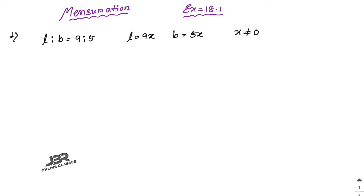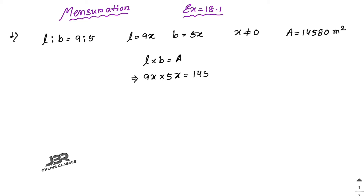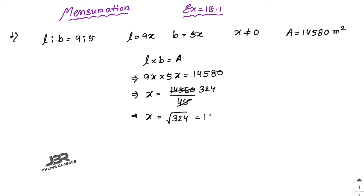If the area of the field is 14,580 square meters, you know the formula: area of a rectangle is length into breadth. So 9x into 5x equals 14,580. Therefore x² equals 14,580 divided by 45, which gives 324. So x equals the square root of 324, which is 18 meters.